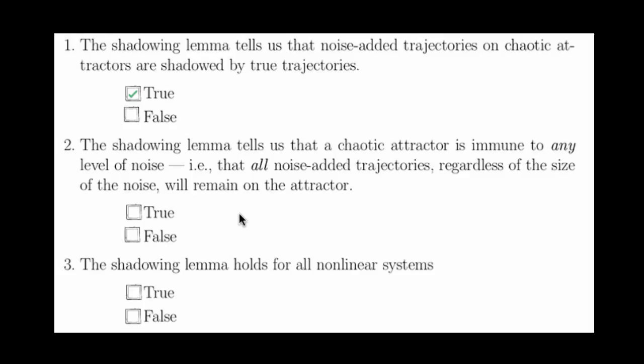However, question 2 really gets at the nuances of the shadowing lemma. It asks if the shadowing lemma tells us that a chaotic attractor is immune to any level of noise—that all noise-added trajectories, regardless of the size of the noise, remain on the attractor. And this is false.